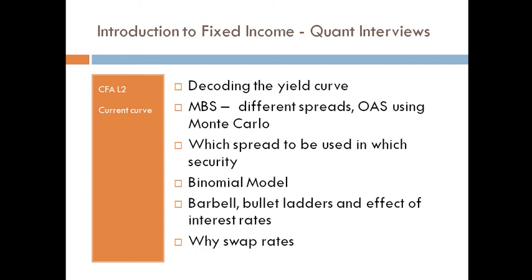Some of the questions that are asked relate to mortgage-backed securities or collateralized debt obligations. We use the option-adjusted spread for anything that could be prepaid, because that takes out the option cost of prepayment. Which spread to use for which security is important — we have Z-spread, OIS, and nominal spread.